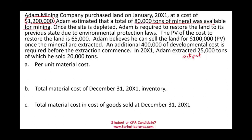Once the site is depleted, Adam is required to restore the land to its previous state due to environmental protection laws — for example, planting trees, building fences, making it look good. The present value of the cost to restore the land is $65,000. Notice I said present value because you have to pay this money down the road, but it costs $65,000 in today's terms using the time value of money. In some problems they give you the future amount and a present value factor; here the present value is simply given as $65,000.